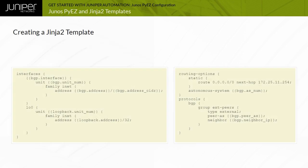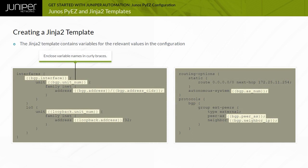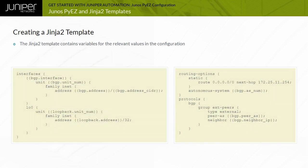This screen shows the same basic configuration structure, but the device-specific configuration values are replaced with Jinja2 variables enclosed in curly braces. The names of the variables can be anything you like, and you will use them in the device-specific YAML variable files. In this example, the variable names begin with either BGP or Loopback.